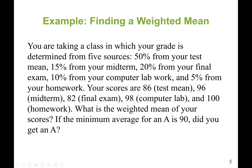Let's see an example. We are taking a class in which our grade is determined from five sources: 50% from the test mean, 15% from the midterm, 20% from the final exam, 10% from computer lab work, and 5% from homework. The scores are: test mean 86, midterm 96, final exam 82, computer lab 98, and homework 100. What is the weighted mean of your scores?